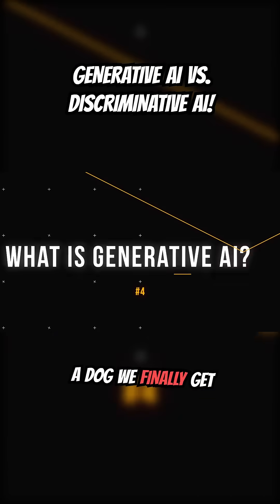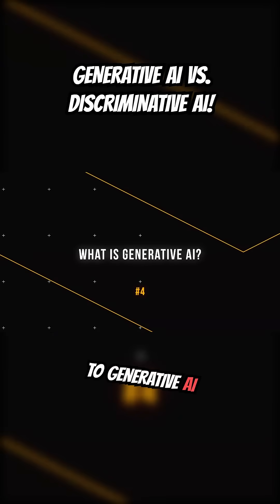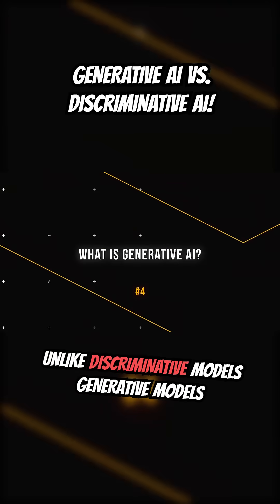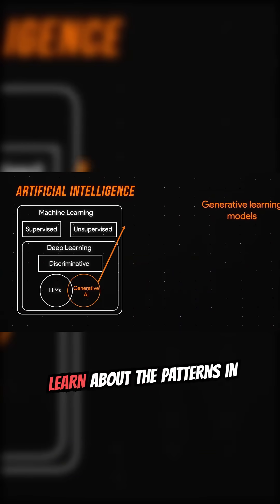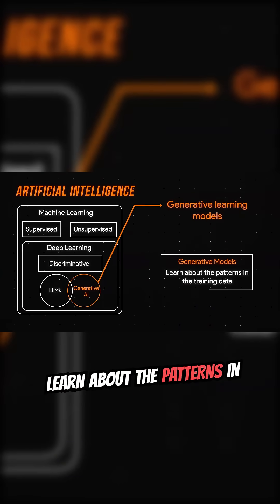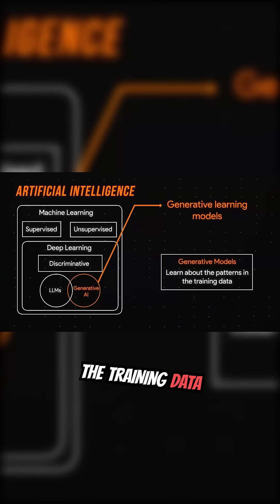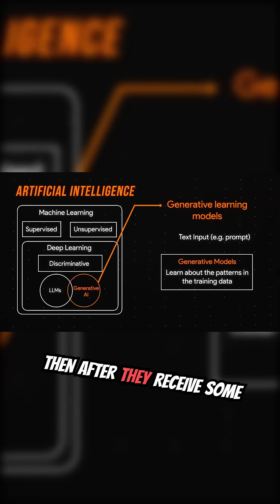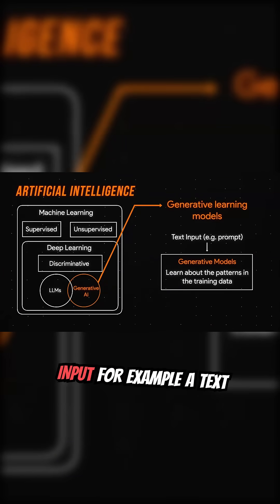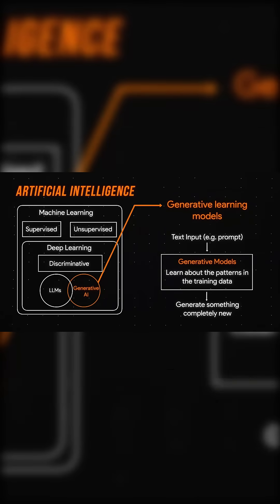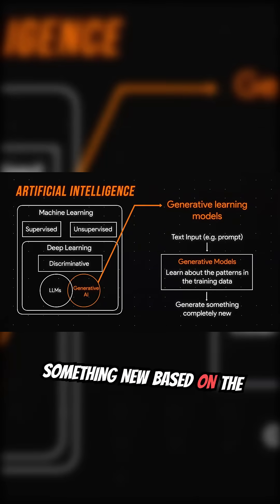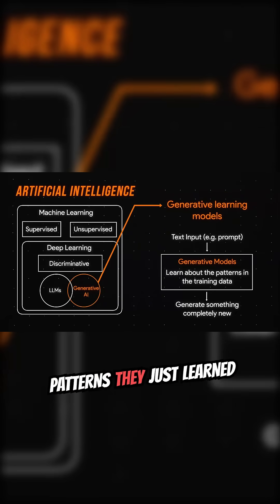A dog. We finally get to generative AI. Unlike discriminative models, generative models learn about the patterns in the training data. Then after they receive some input, for example, a text prompt from us, they generate something new based on the patterns they just learned.